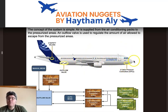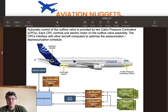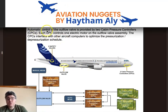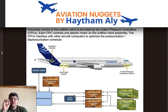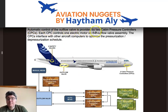Automatic control of the outflow valve is provided by two cabin pressure controllers. System one is CPC1 plus motor one, and system two is CPC2 plus motor two. Each cabin pressure controller controls one electric motor on the outflow valve assembly.